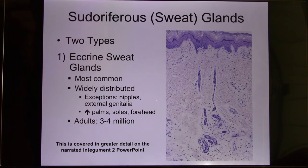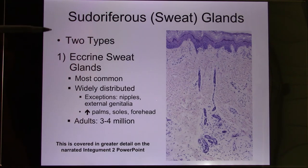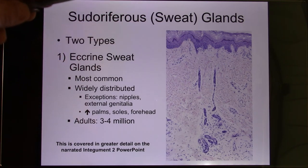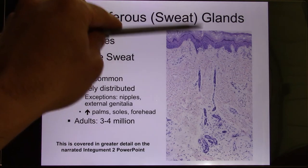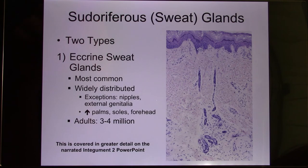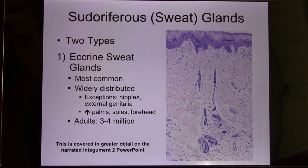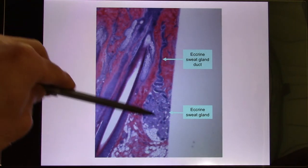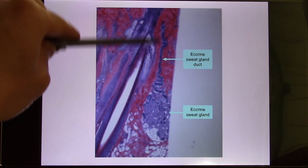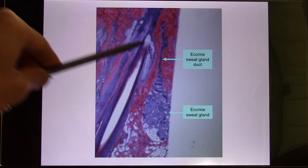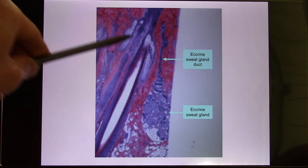Next is the sweat gland. We have two kinds. The first is the eccrine sweat gland. You have it from birth — three to four million of them. Their function is to produce sweat to regulate body temperature, because when sweat evaporates your body temperature drops. It's an exocrine gland with a tube that goes out to the surface. In a histology slide, you can find the sweat gland, and next to the hair you'll see the sebaceous glands showing a lot of bubbles.